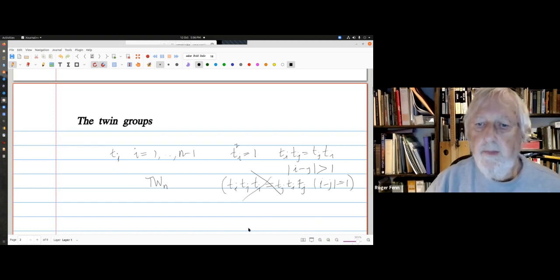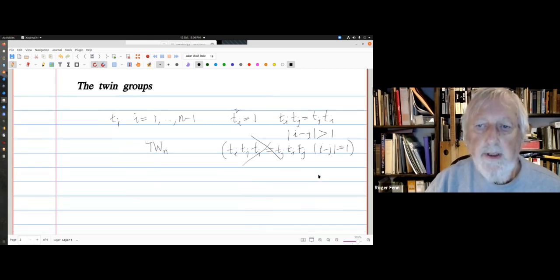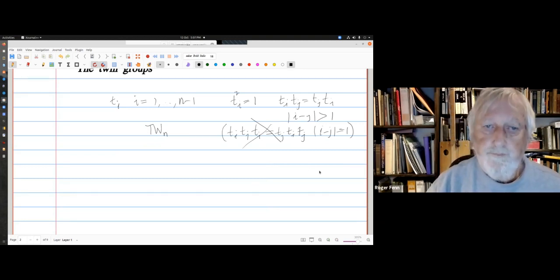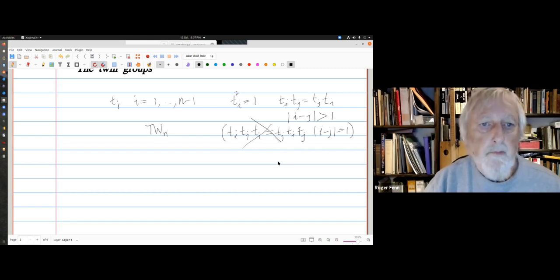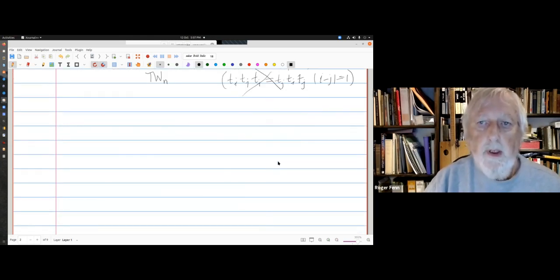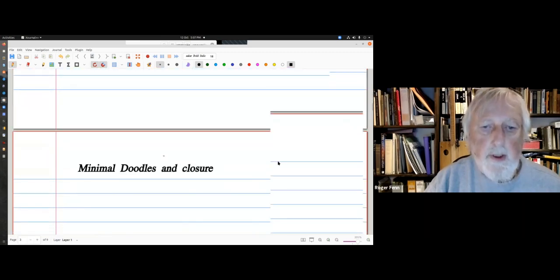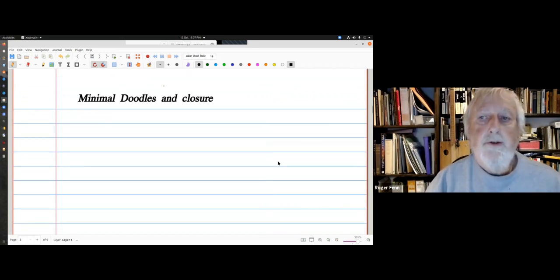If I were to add the relation T_i T_j T_i equals T_j T_i T_j for i minus j equals one, I would get the symmetric group on N letters. Because this relationship doesn't hold, that's why it's like a doodle. These are Coxeter groups.